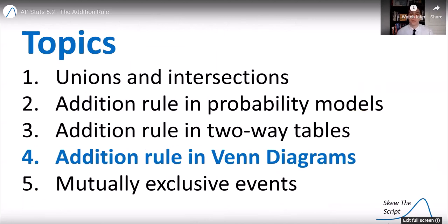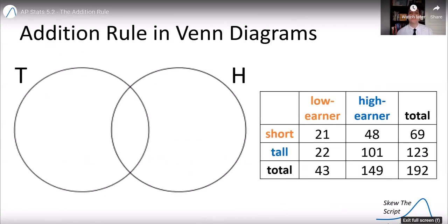Now, let's look at the addition rule in Venn diagrams. So we can put our categories into a Venn diagram. The people who were high-income earners and tall are the intersection between those tall and high-income earner circles. That's 101. 48 were high-income earners, but not tall. 22 were tall, but not high-income earners. And then 21 were neither tall nor high-income earners. So we put those there.